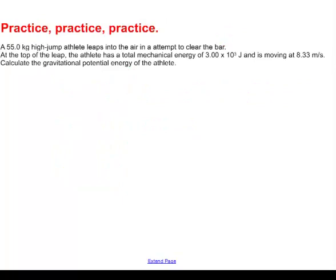Now here's one a bit backwards. We have a 55 kilogram high jump athlete who leaps into the air to try to clear a bar. At the top of the leap, the athlete has a total mechanical energy worth 3.00 times 10 to the third joules, and he's moving at a velocity of 8.33 meters per second. Calculate the gravitational potential energy of this athlete. Well, now they tell us what the mechanical energy is. So the original equation says mechanical energy is kinetic energy plus potential energy. We want to find the potential energy. Well, this isn't too hard because all we're doing is adding numbers. So the potential energy is simply going to be the mechanical energy subtract the kinetic energy.